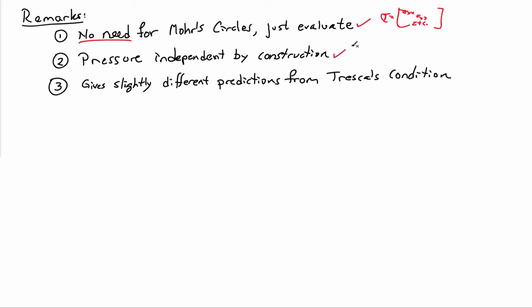It is pressure independent by construction because we're working with the deviatoric strain energy on the criteria. So deviatoric strain energy is less than or equal to deviatoric strain energy in a 1D calibration test. Now, one thing to note about this is that it's going to give slightly different predictions from the Tresca condition, but they're not too much different, and both conditions are really models of real physical behavior. So there's nothing to be alarmed about with respect to the fact that the criteria give you slightly different predictions for yield. But the predictions are actually quite close to each other.